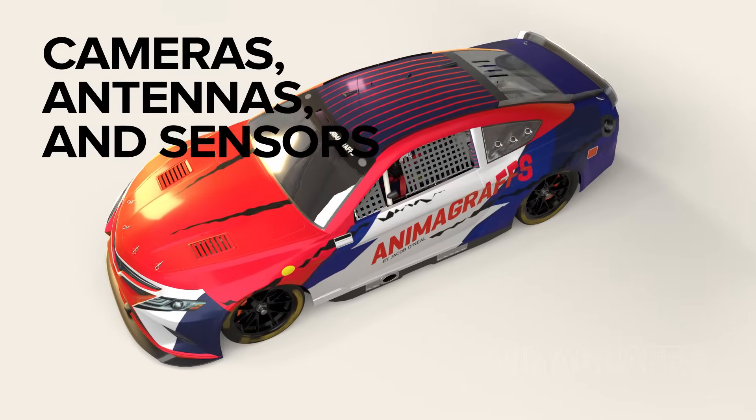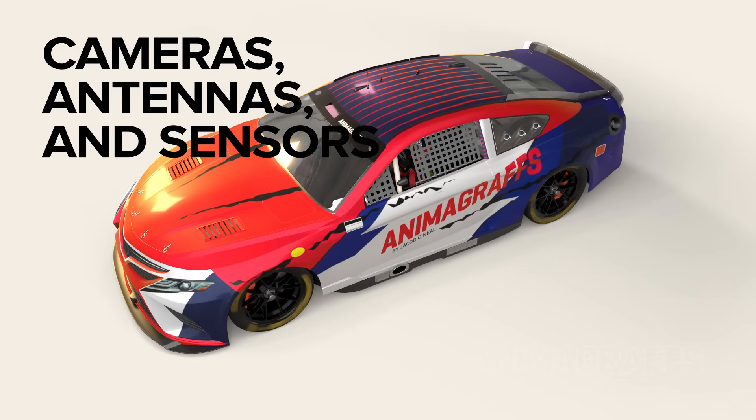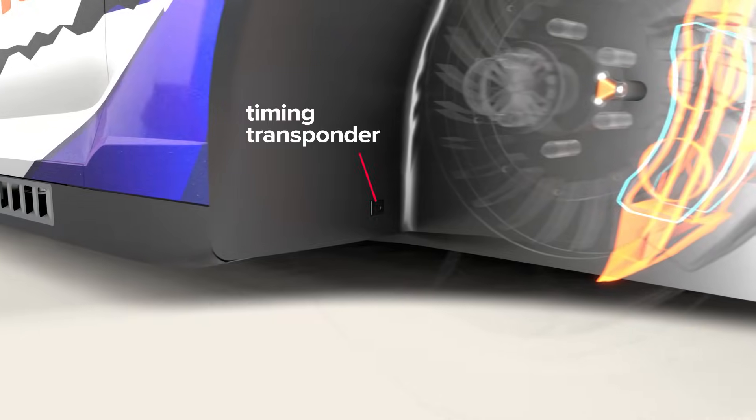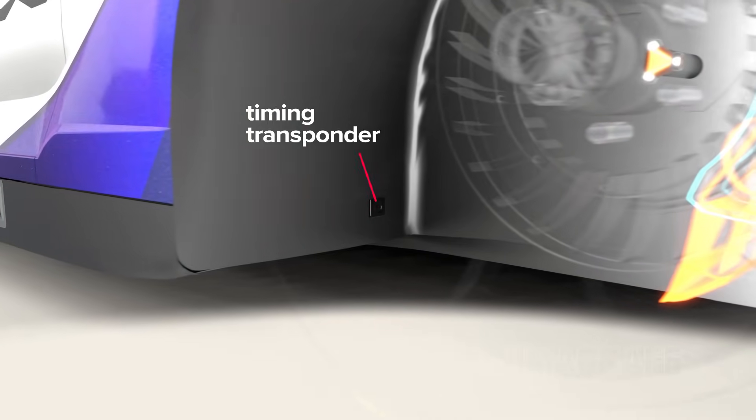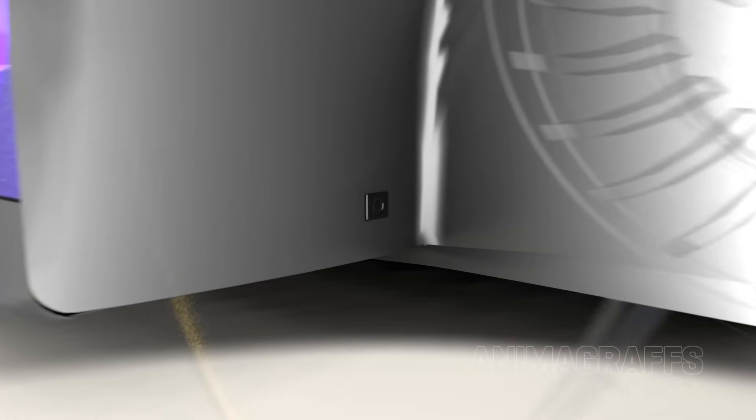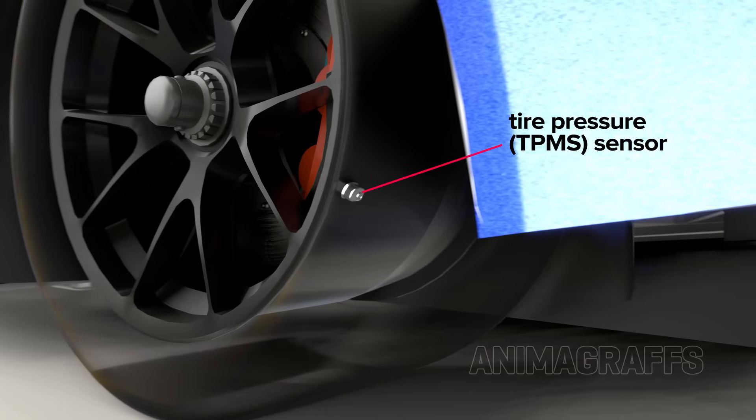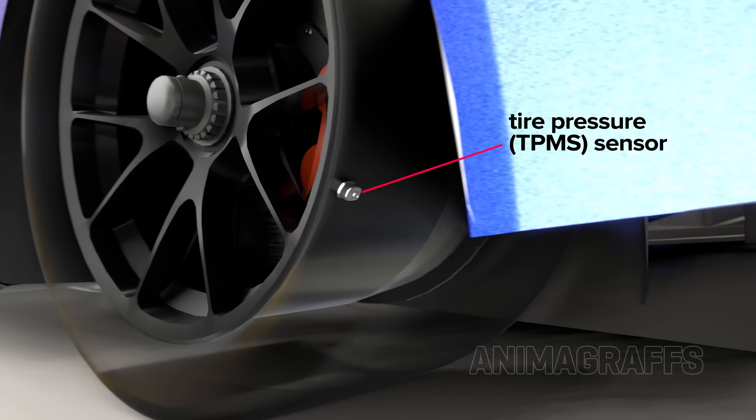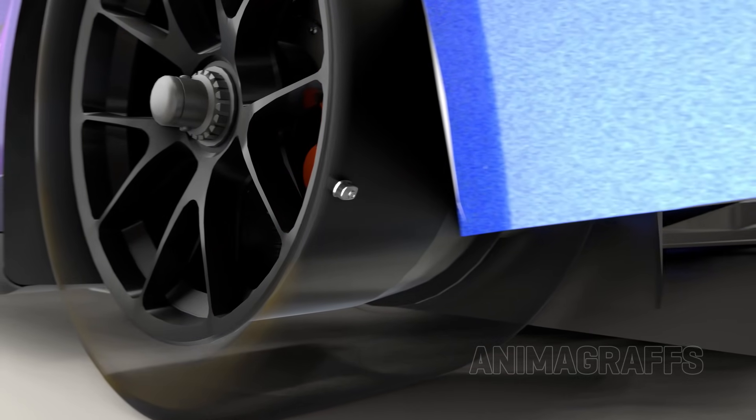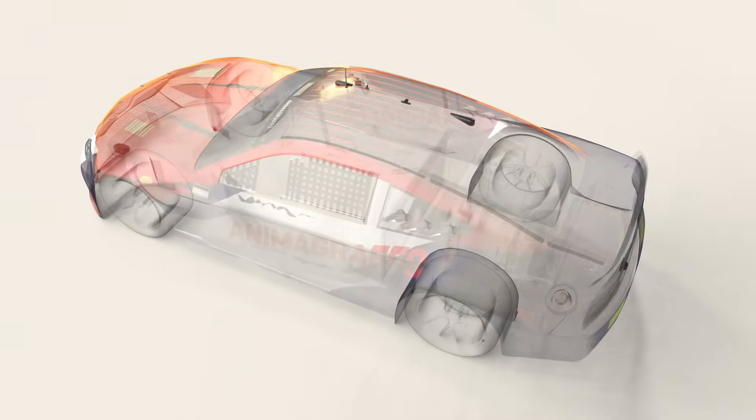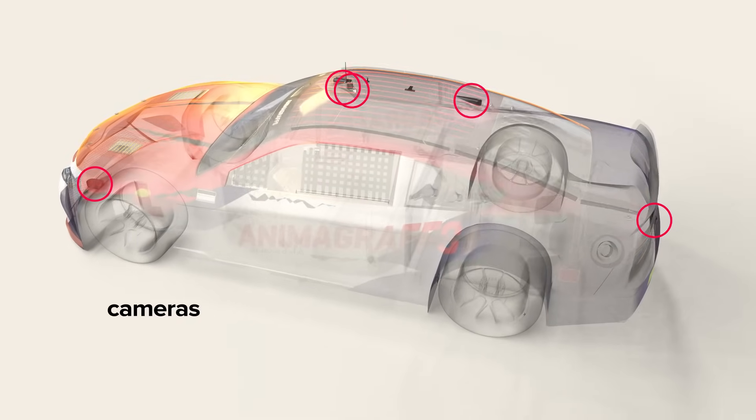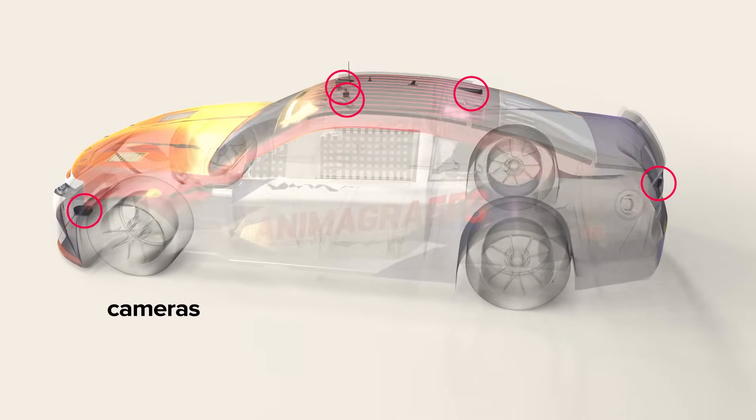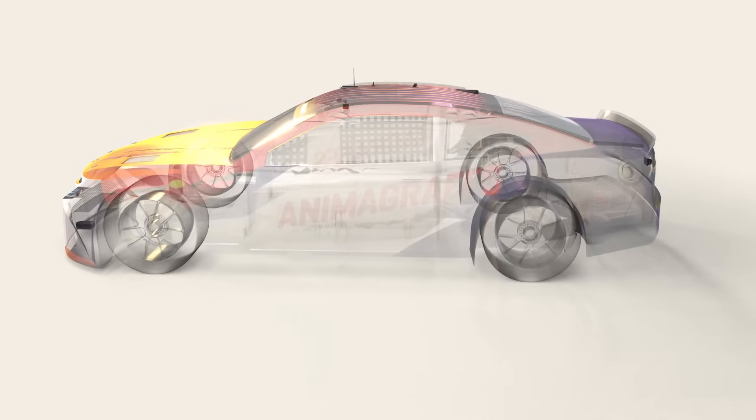There are cameras, antennas, and sensors all over these cars. For example, a timing transponder just inside the rear passenger wheel well tracks lap times down to the thousands of a second. A tire pressure monitoring system, or TPMS sensor, is attached to each wheel. Cameras on the front, top, and rear of the vehicle, as well as in the cockpit, are used during broadcasts to bring the audience into the action.